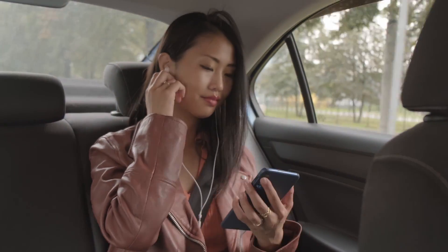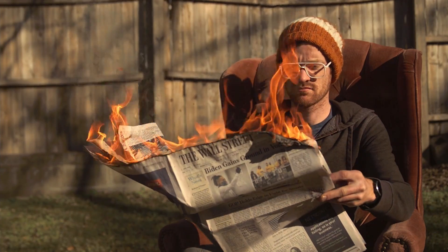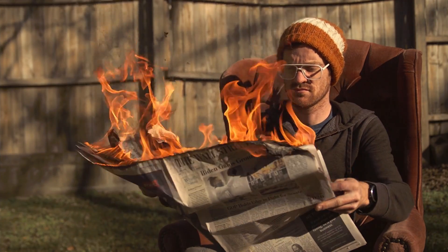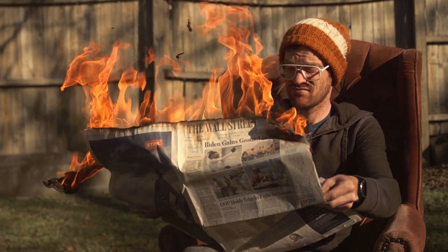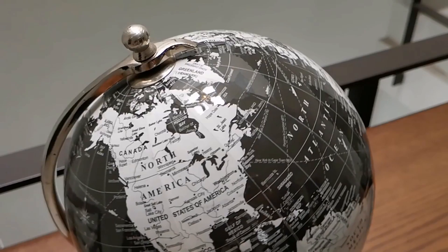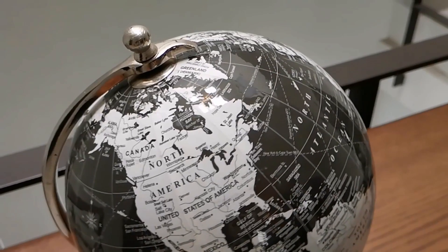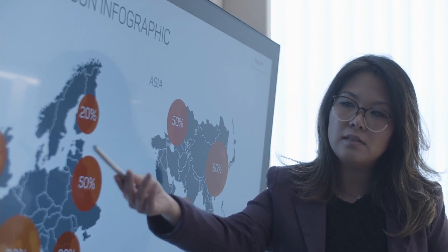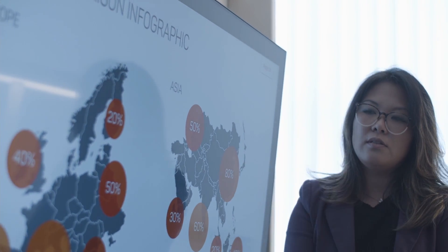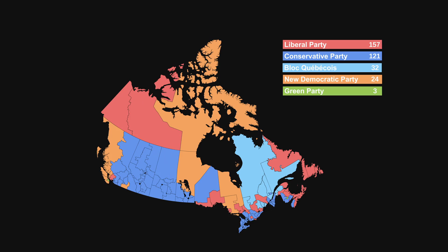Maybe I'm listening to someone's speech. Maybe I'm reading an article. Or maybe I'm looking at a map. Maps are popular tools for representing data and are used all the time. Here's one of the 2019 federal election results.